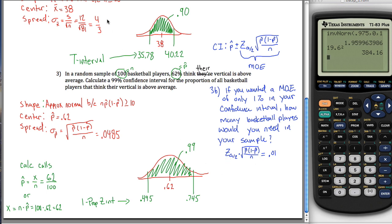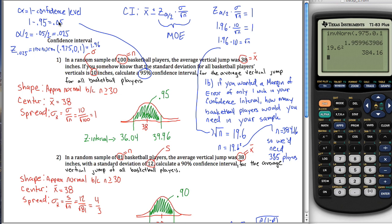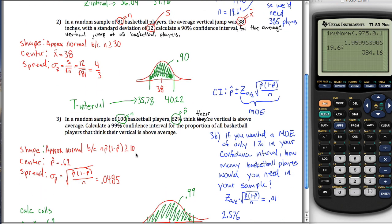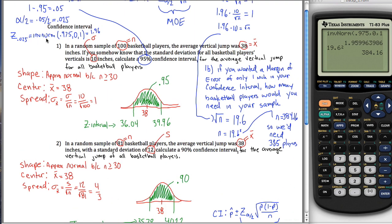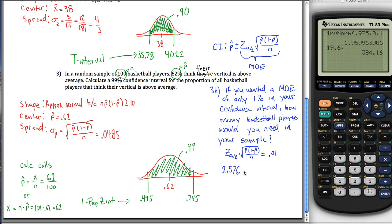Z sub alpha over 2 I can figure out the same way I did above — I think you'd get 2.576. Instead of alpha being 0.05 from a 95% confidence level, my value for alpha would be 0.01 because I have a 99% confidence level. So I would use inverse norm of 0.995, mean 0, standard deviation 1, which gives me 2.576. Then I multiply that by the square root of p-hat, which I got as 0.62, times (1 minus p-hat), which is 0.38, divided by N, and that equals 0.01.